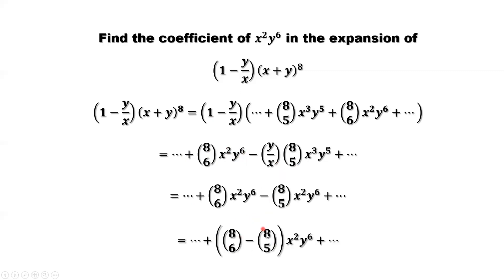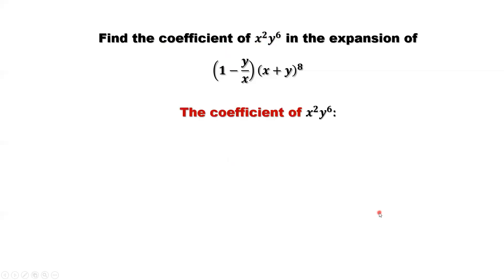Those are two constants. If we simplify, this is our answer for the coefficient of the term x²y⁶. In summary, we only need to calculate the following: that's (8 choose 6) minus (8 choose 5). Here n equals 8.